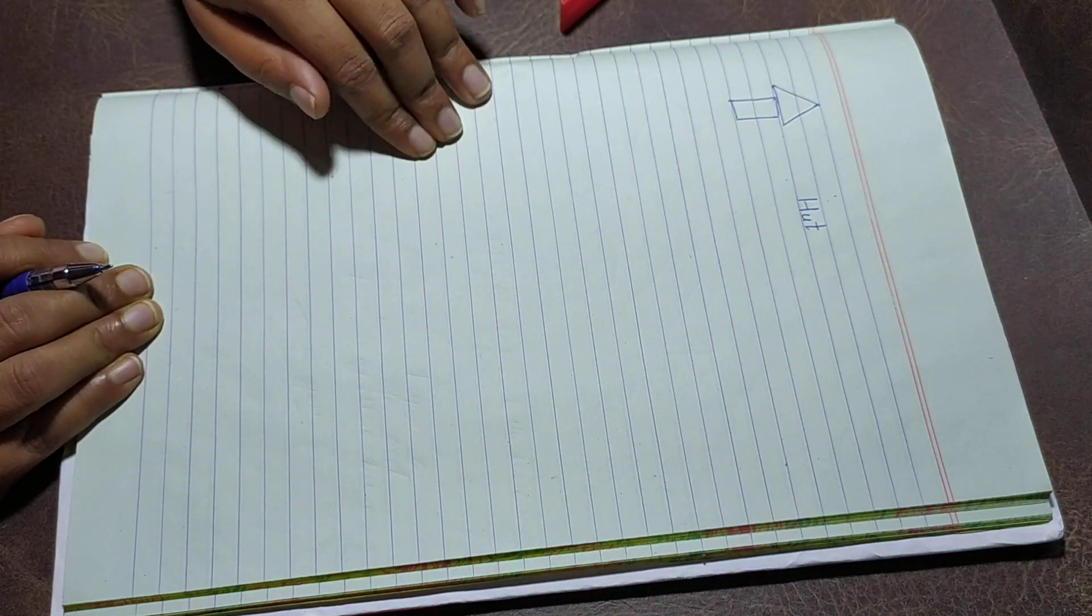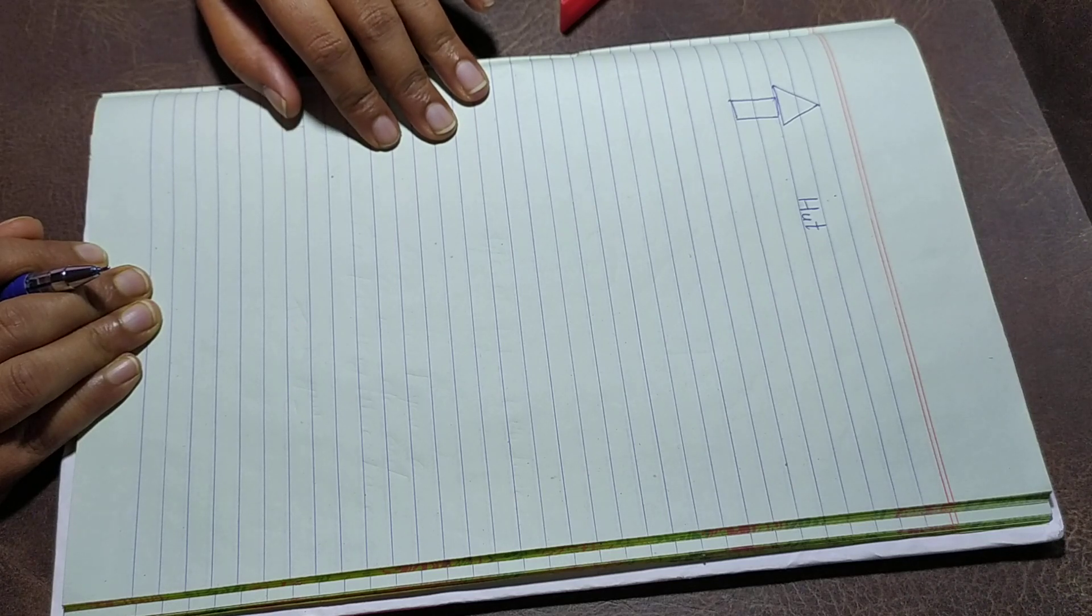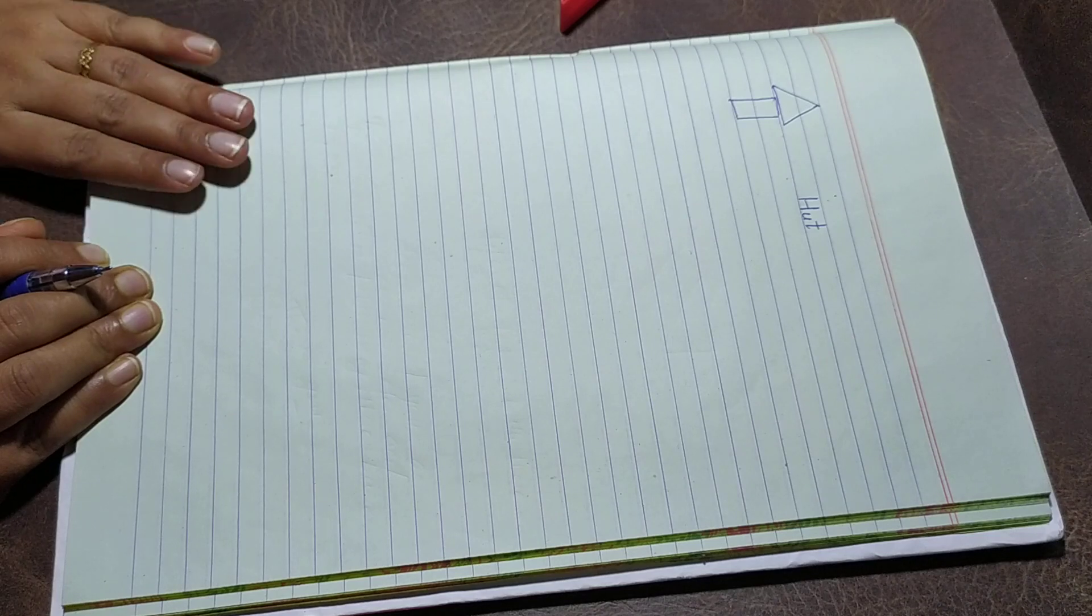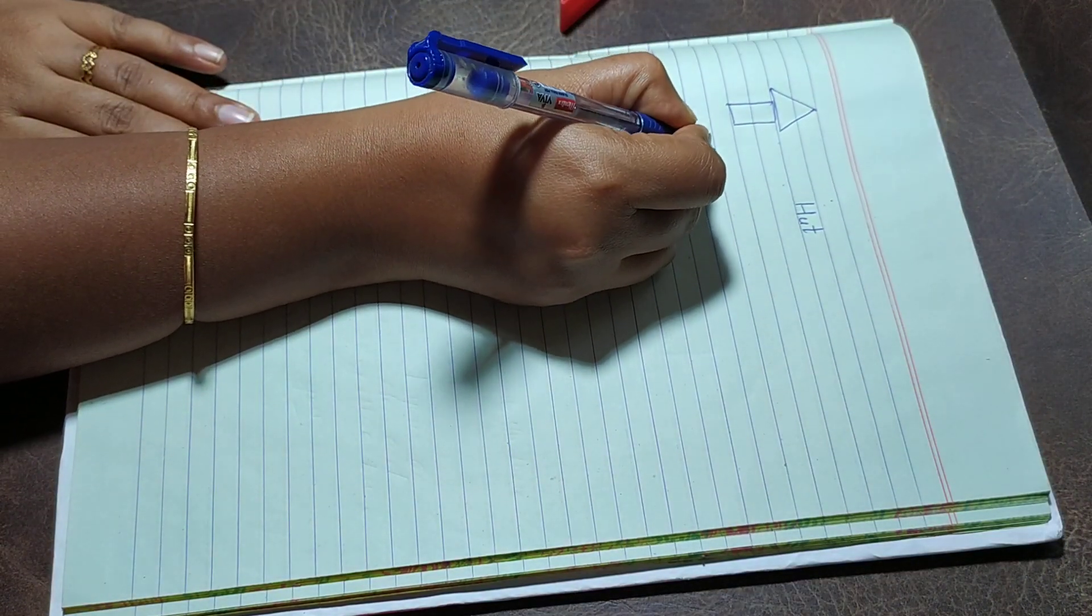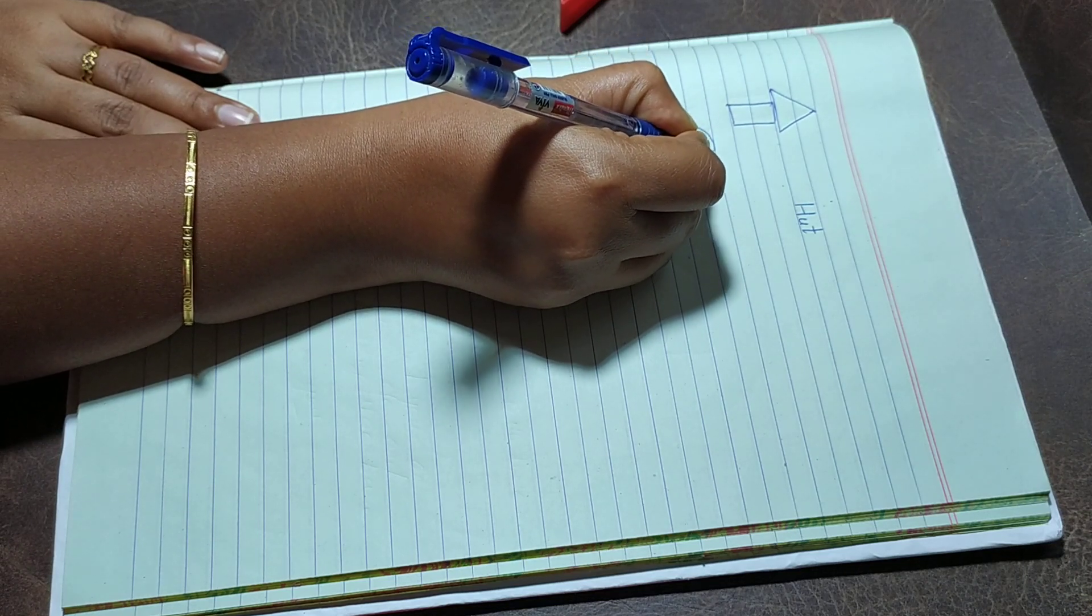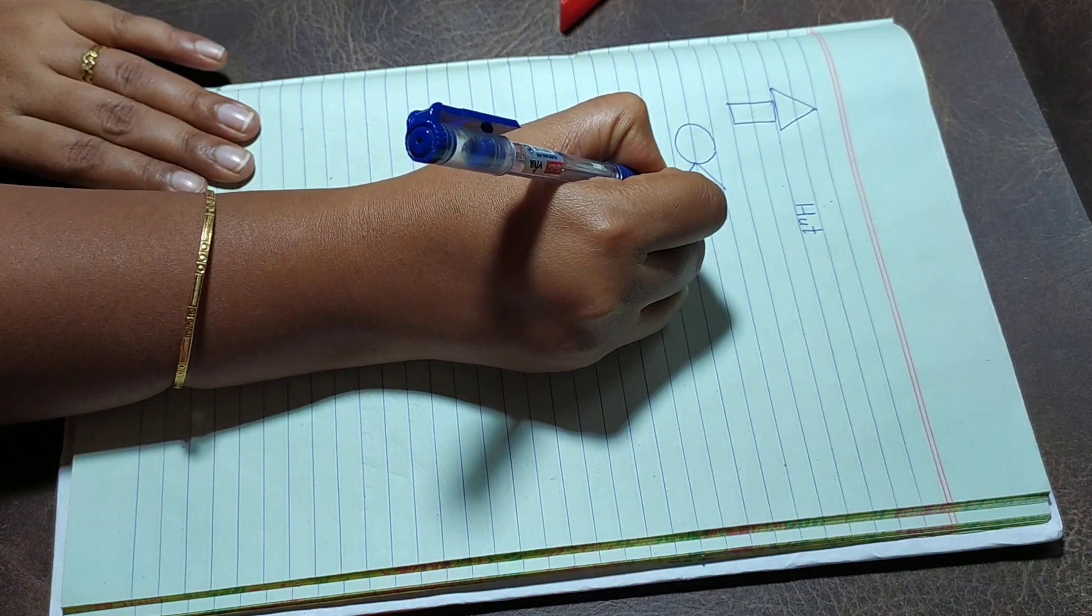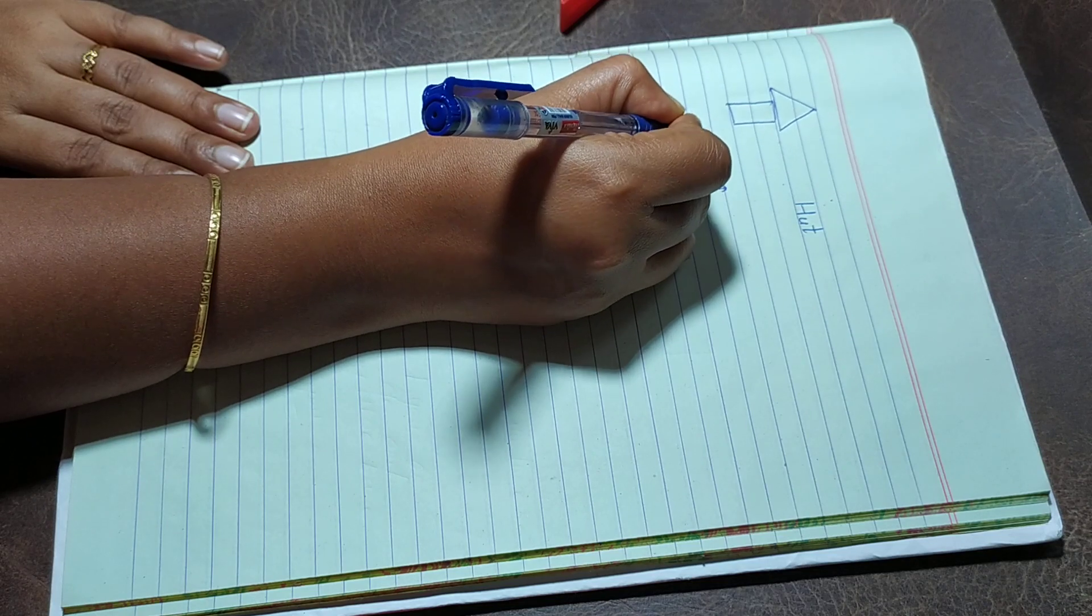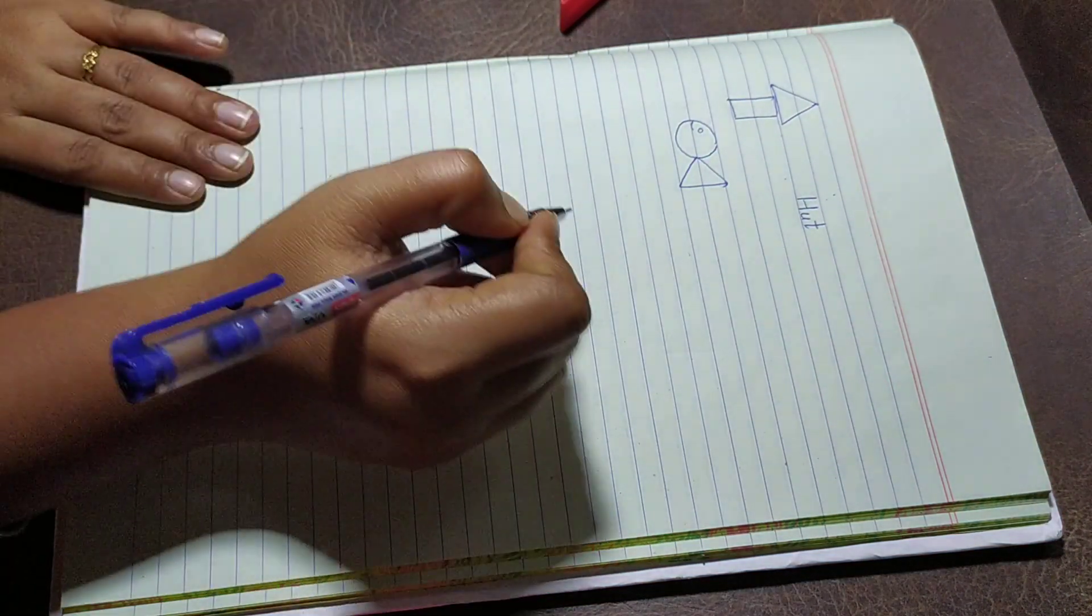As you know, our chapter is the fish tail. So try to make fish from these basic shapes. Let's try. One circle and triangle. Cute fish.